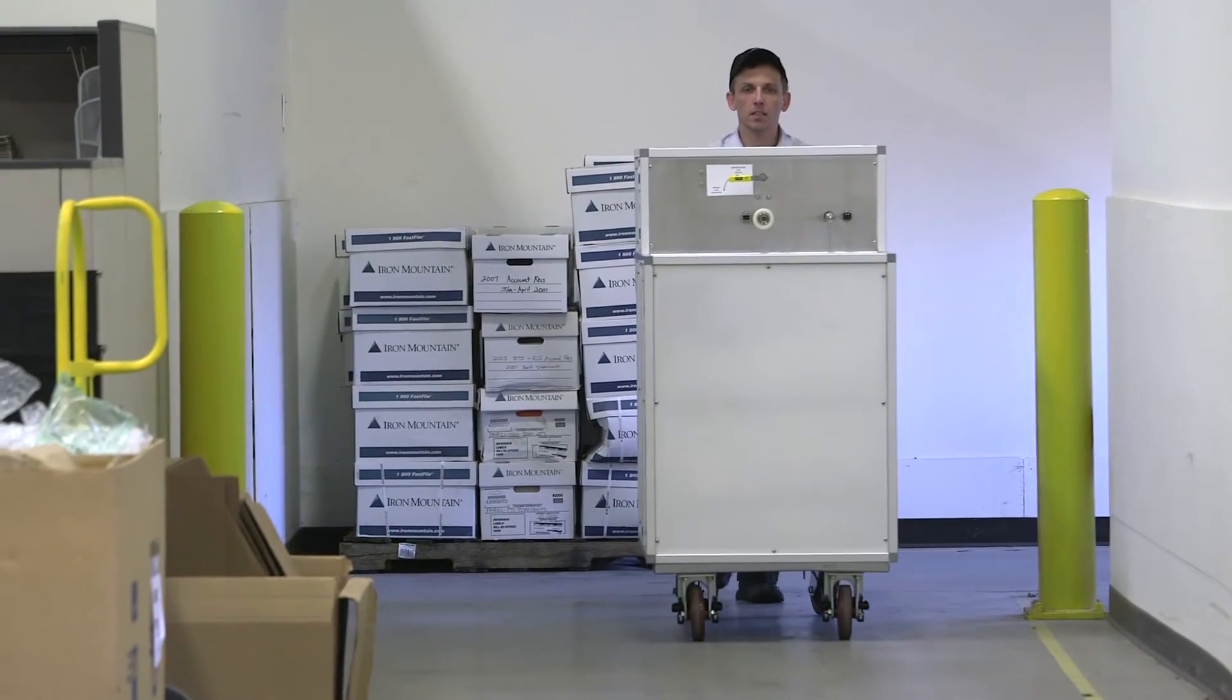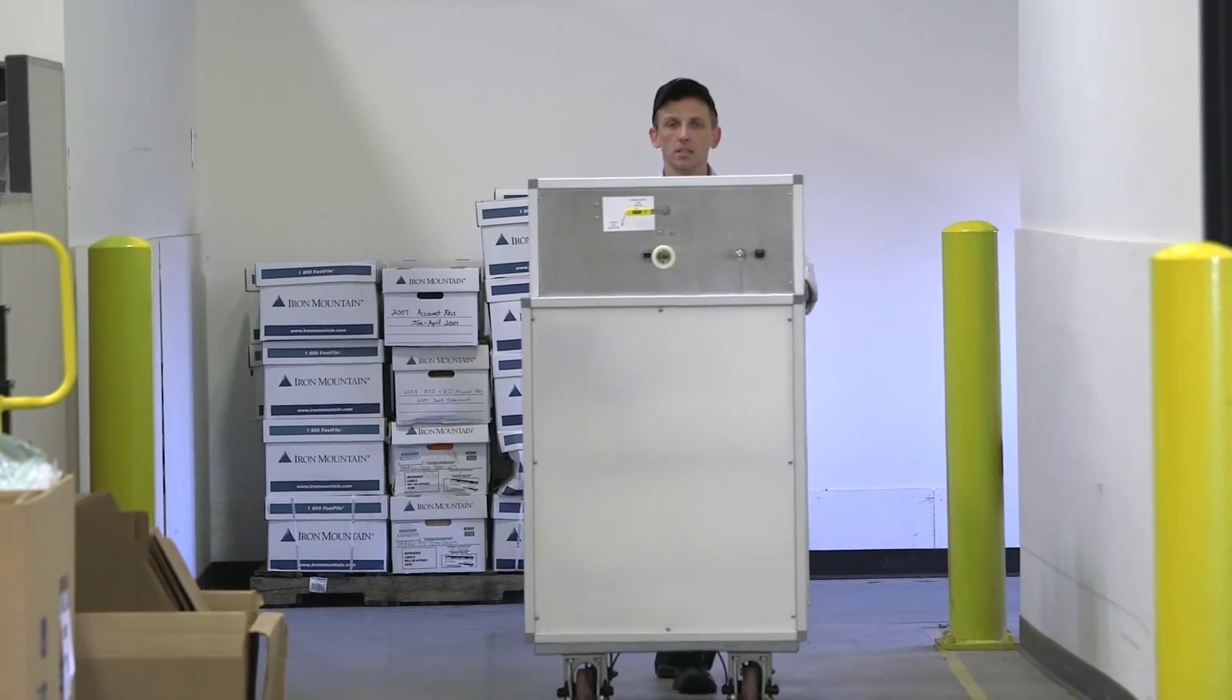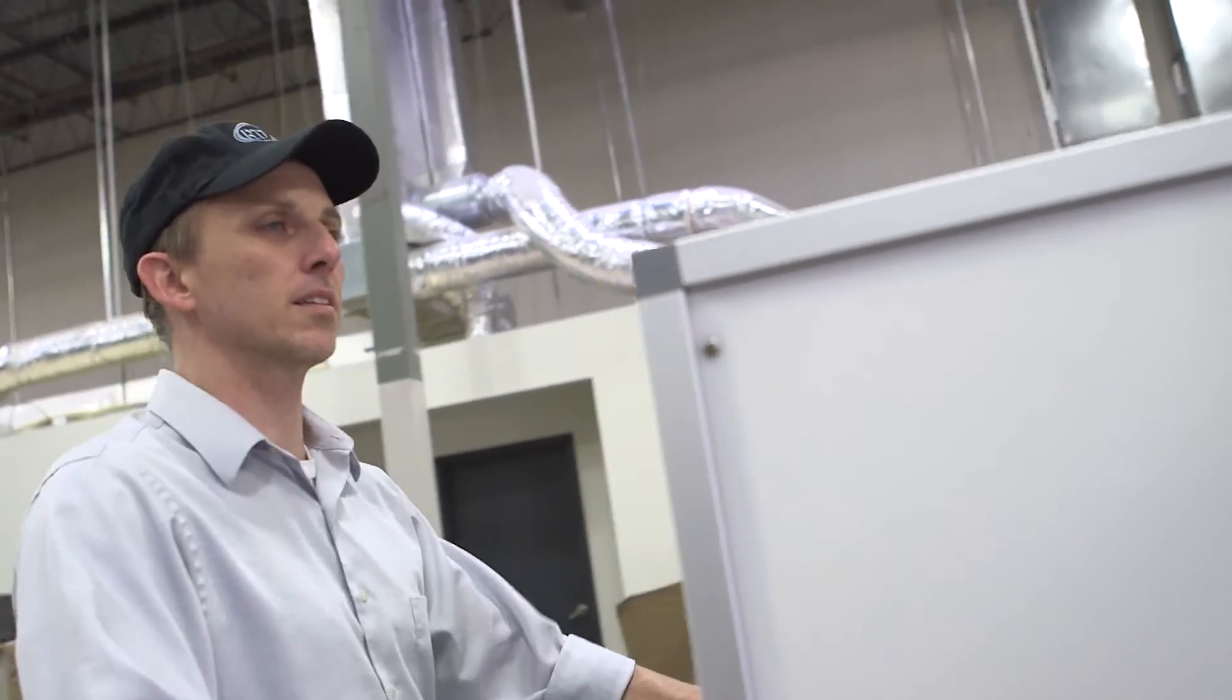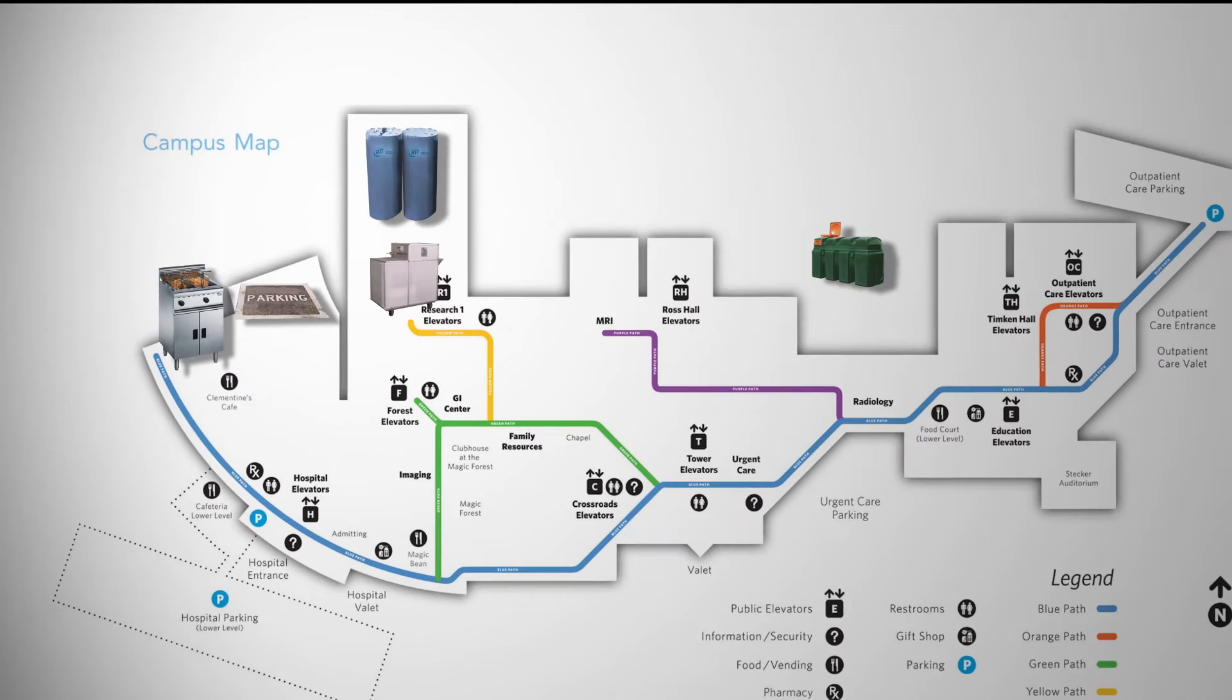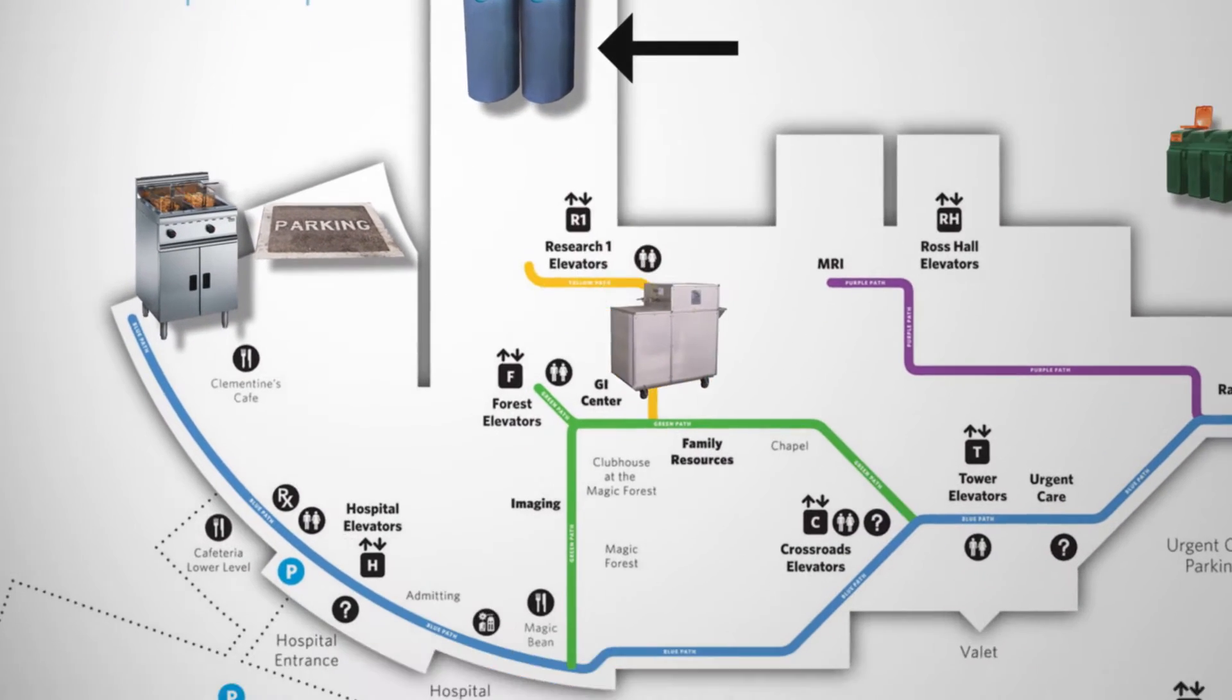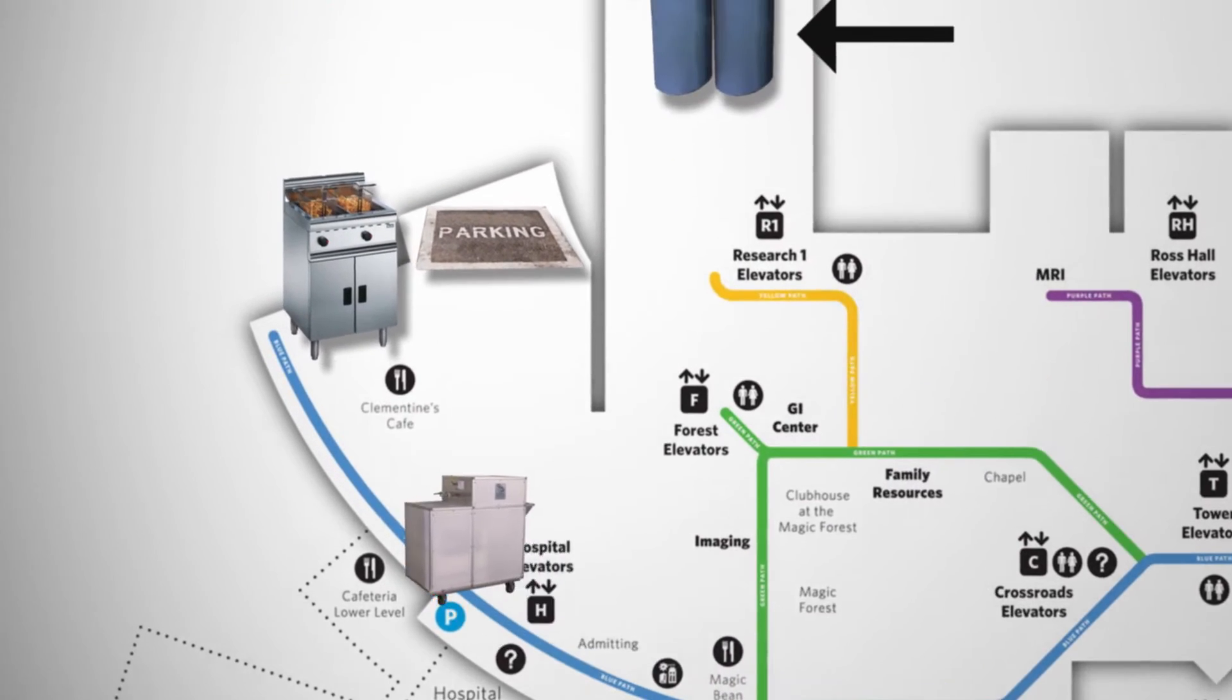That's because RTI's innovative portable oil system provides a clean, safe, and secure method to transport oil through the facility. The portable oil system transports oil from the standard RTI oil tanks located inside the facility to a parking space near the restaurant.